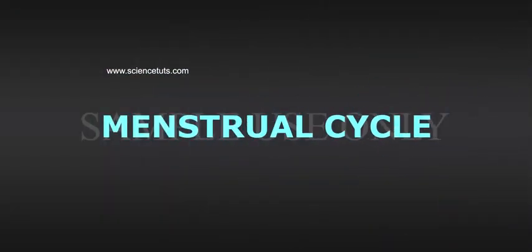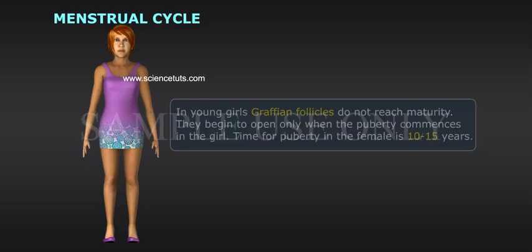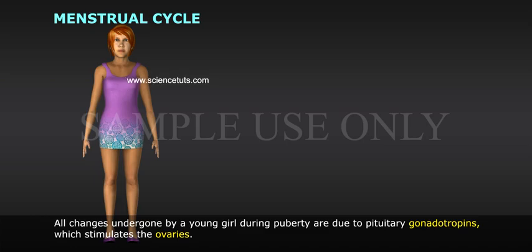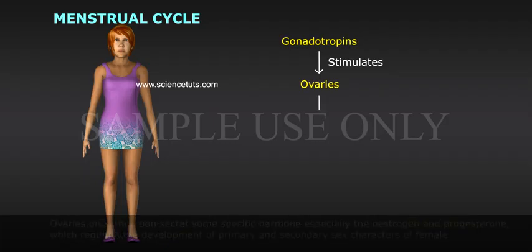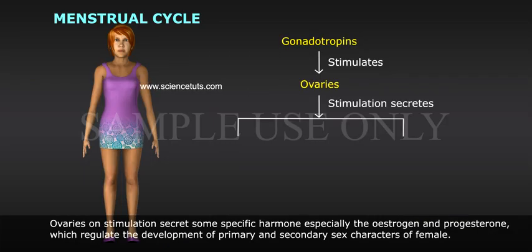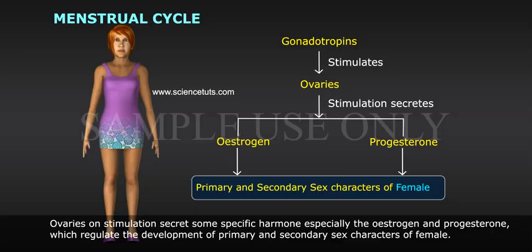Menstrual cycle: In young girls, Graafian follicles do not reach maturity; they begin to ripen only when puberty commences. The time for puberty in females is 10 to 15 years. All changes undergone by a young girl during puberty are due to pituitary gonadotropins, which stimulate the ovaries. The ovaries on stimulation secrete specific hormones, especially estrogen and progesterone, which regulate the development of primary and secondary sex characters of the female.